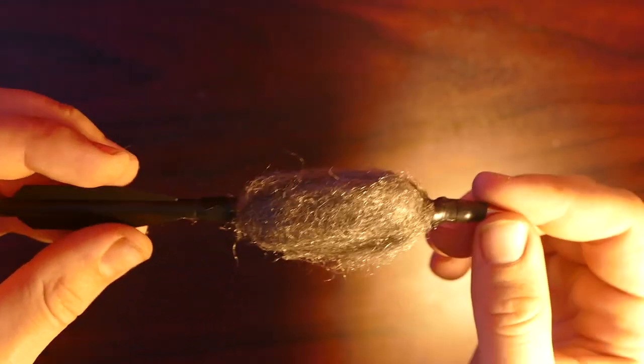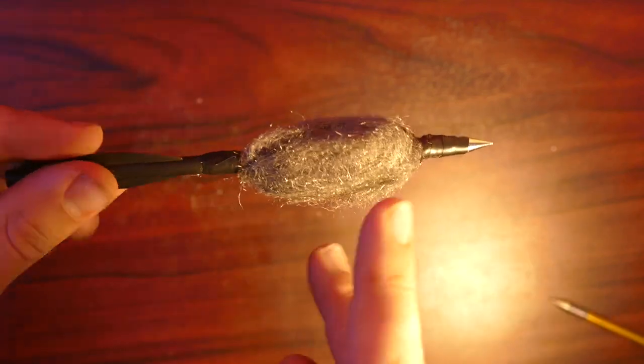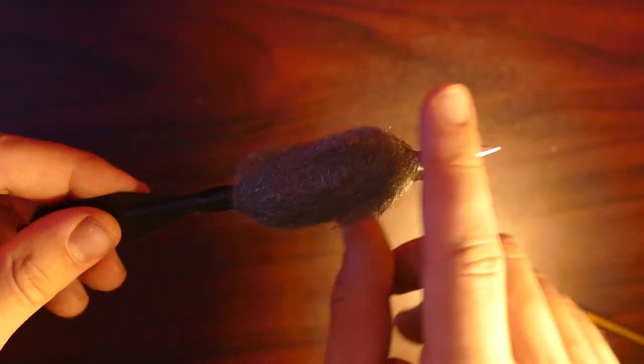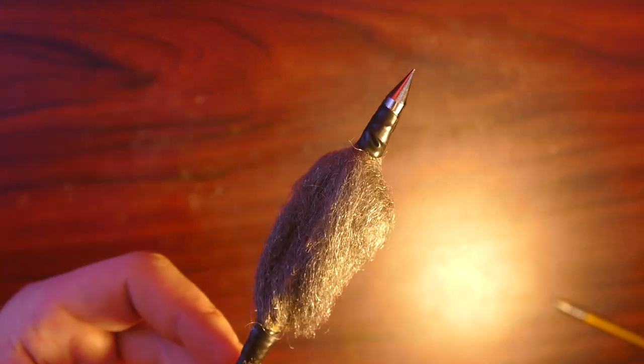Alright, so the arrow is done. That's basically all there is to it. I think this should work. If we have two metal rails sending power through this, the steel wool should light up pretty well. Yeah, let's go modify this crossbow.